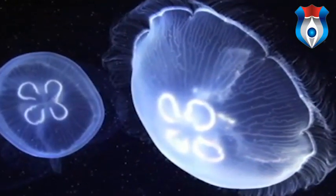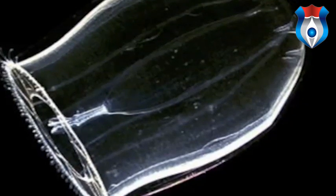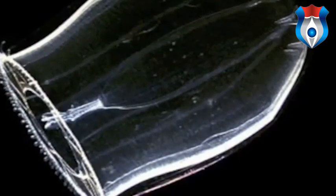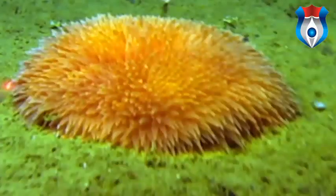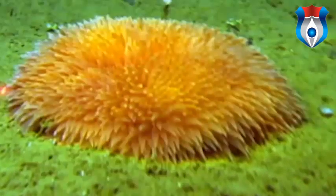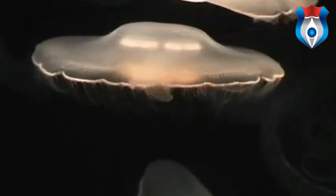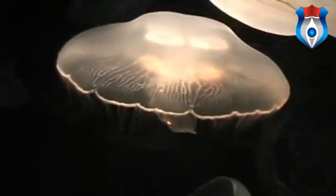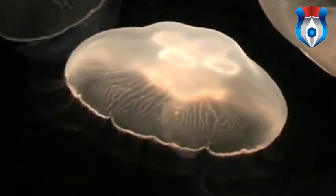Phylum Cnidaria are aquatic invertebrates including the classes Hydrozoa, Scyphozoa, Cubozoa, and Anthozoa. These species are classified by their radial symmetry, the formation and structure of their bodies, their ability to sting, and the fact that they use a single orifice for eating, waste expulsion, and reproduction. Within phylum Cnidaria there are currently about 9,000 species known to science, a hundred of which are toxic to humans. Although these species vary greatly in size and coloration, the basic formation of their bodies is always the same.